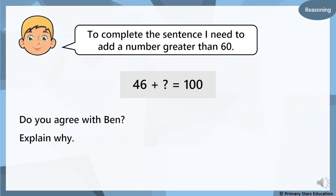Now see if you can answer these questions. To complete the sentence I need to add a number greater than 60. The question says 46 add something equals 100. Use your number bonds to 100 to think about that. 46. And he thinks that he's going to need a number greater than 60. Do you agree with Ben? Can you explain why? Pause it if you need to. See if you can explain it to a grown up or you can write something on your whiteboard.